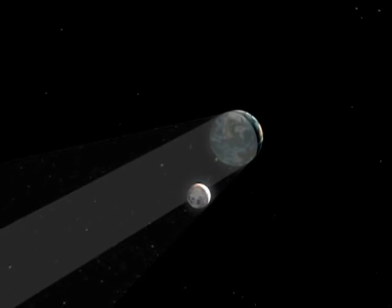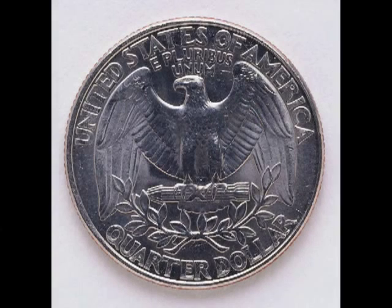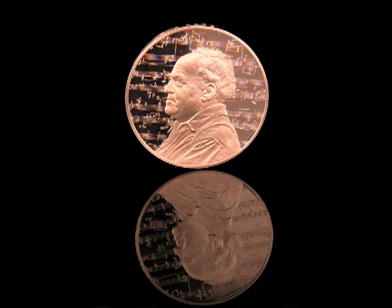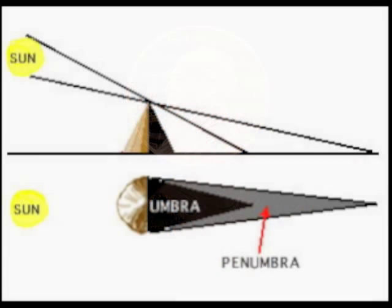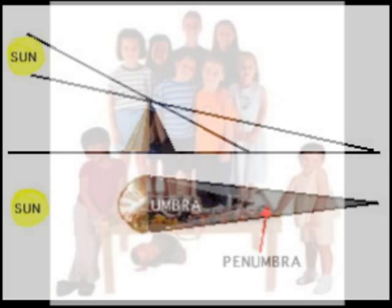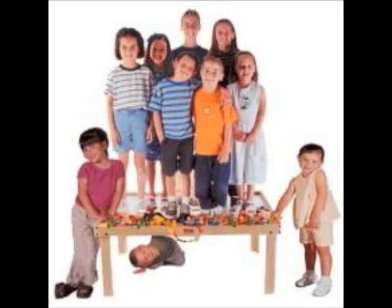One thing I have my students do each year is measure the length of the penumbra of a quarter. A quarter is almost exactly an inch in diameter. They hold a quarter up as high as they can from the ground, with it held perpendicular to the sun's rays. We then find that length of the penumbra is 108 inches. The person holding the quarter usually needs a table to stand on to get the distance far enough off the ground.